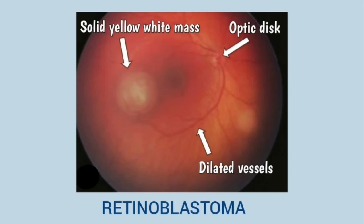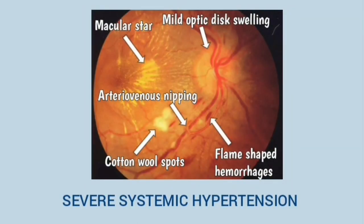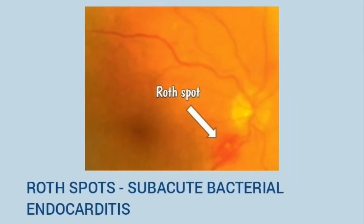This is retinoblastoma, which appears as a solid yellow-white mass adjacent to the macula with dilated blood vessels. This is a characteristic fundus image of severe systemic hypertension, showing mild optic disc swelling, macular star, arteriovenous nipping, cotton wool spots, and flame-shaped hemorrhages. This is a Roth spot in subacute bacterial endocarditis — a central yellow-white dot surrounded by a red area.